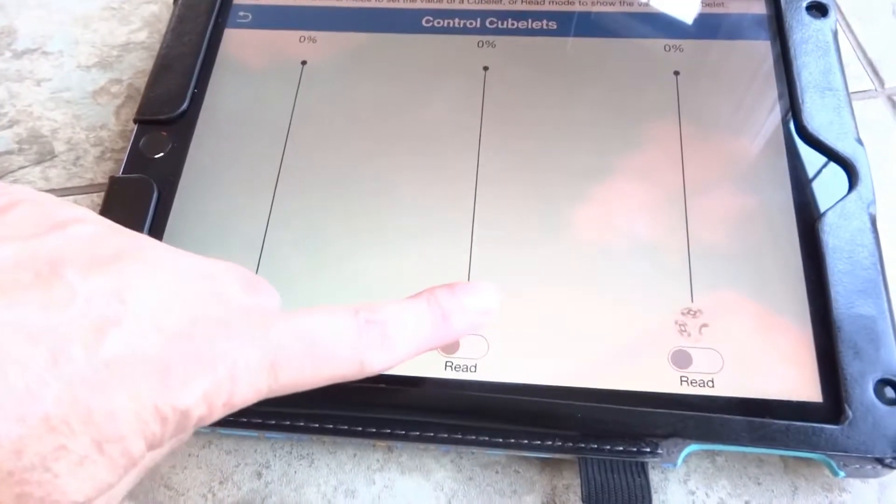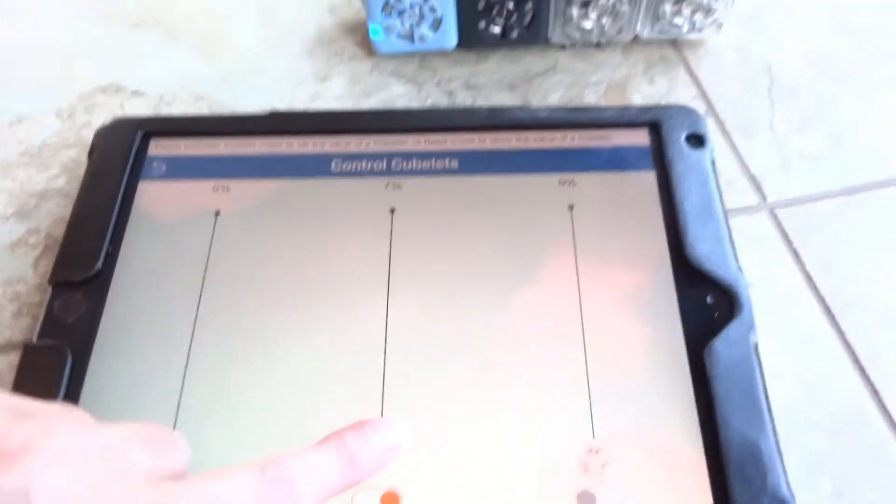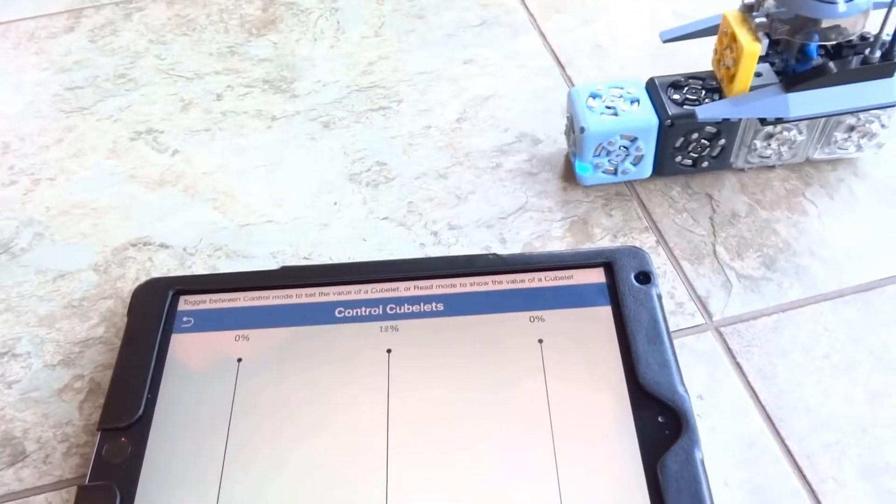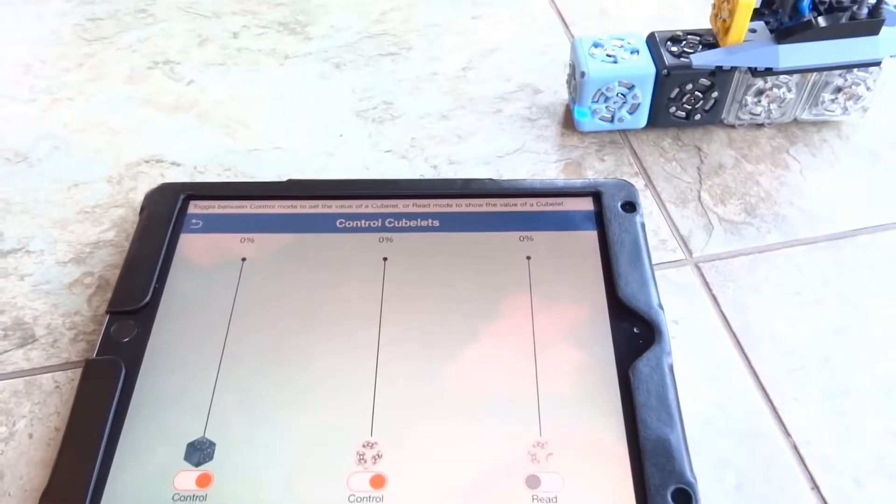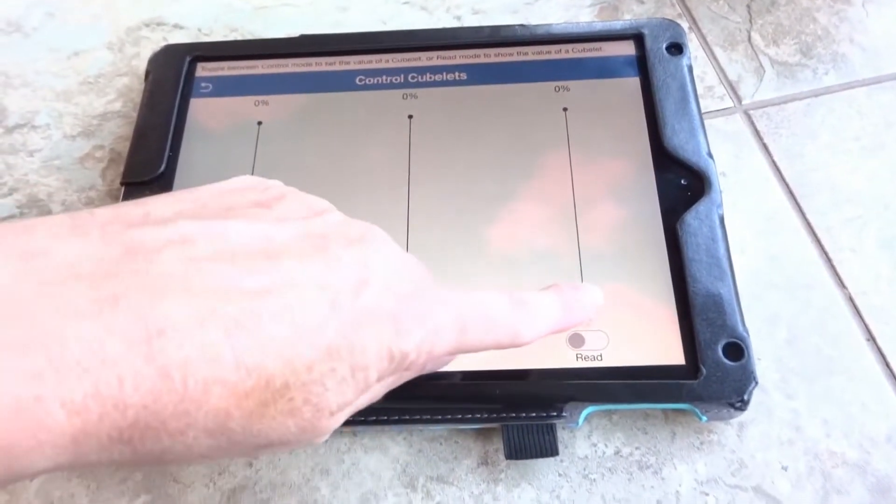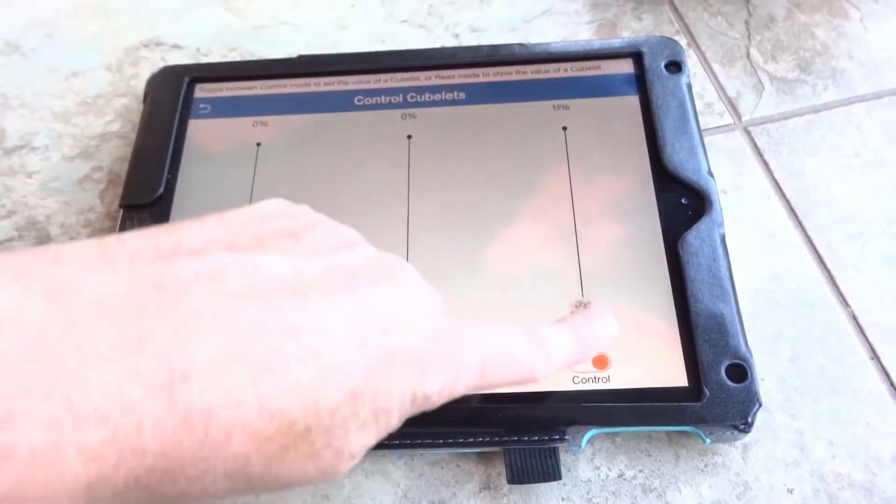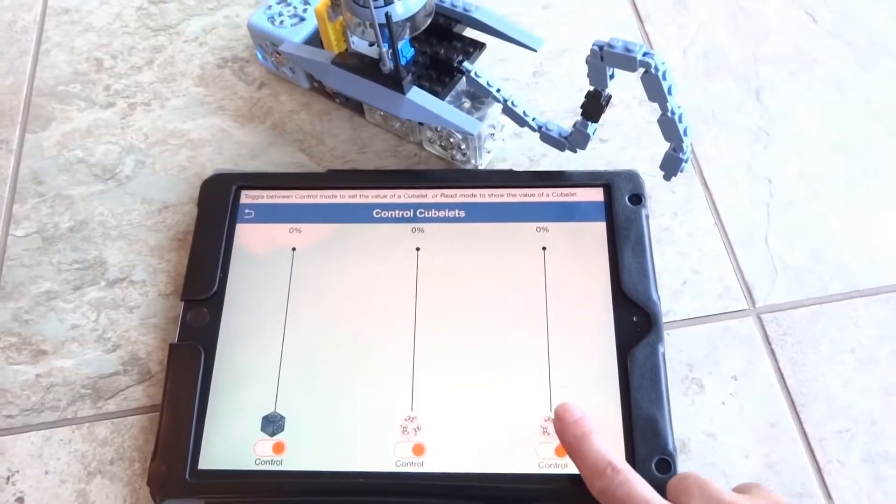That's the battery. That one is the controller to make it go, and that one is a light. When I slide it...